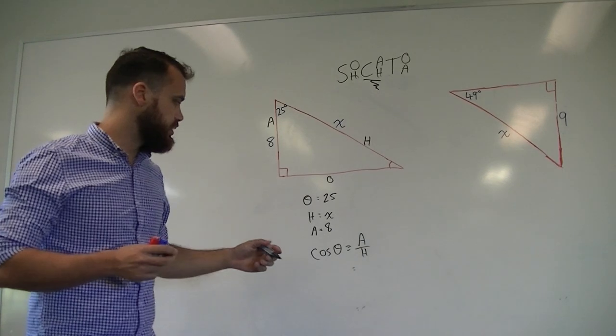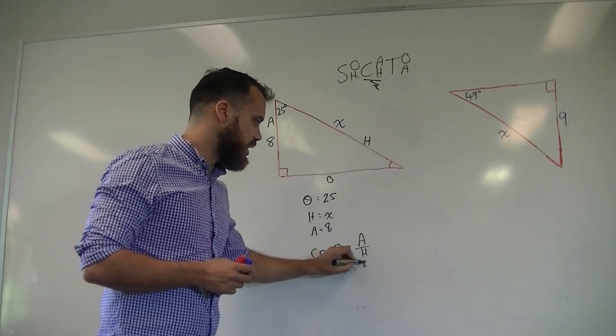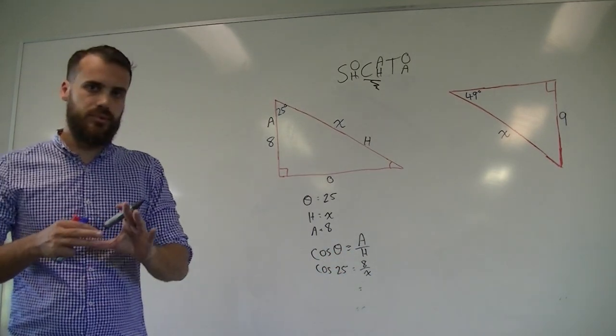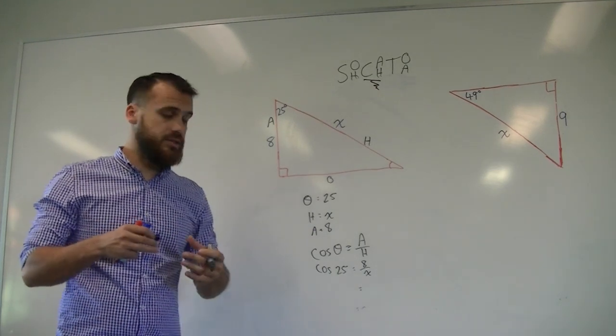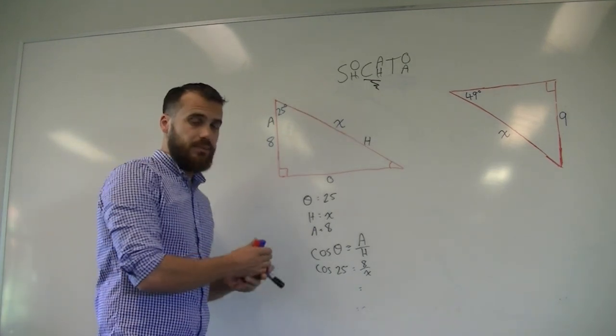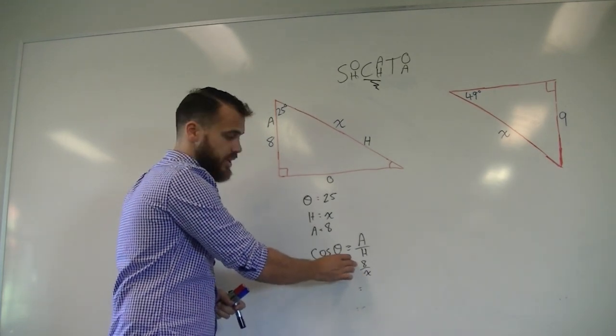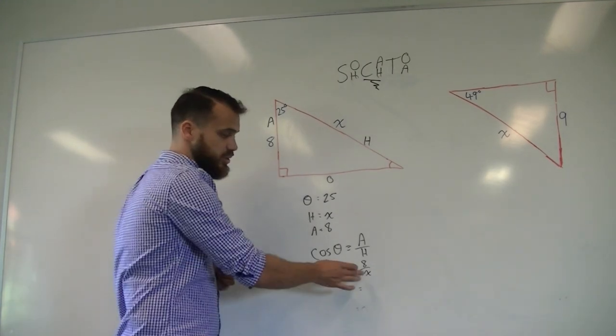Next step, put all your numbers in there. Cos 25 equals 8 over x. Stop. Okay, this is the point where you need to have a look and go, what's next? In our last couple of videos, x was on the top of the fraction and so we moved something in a certain way.